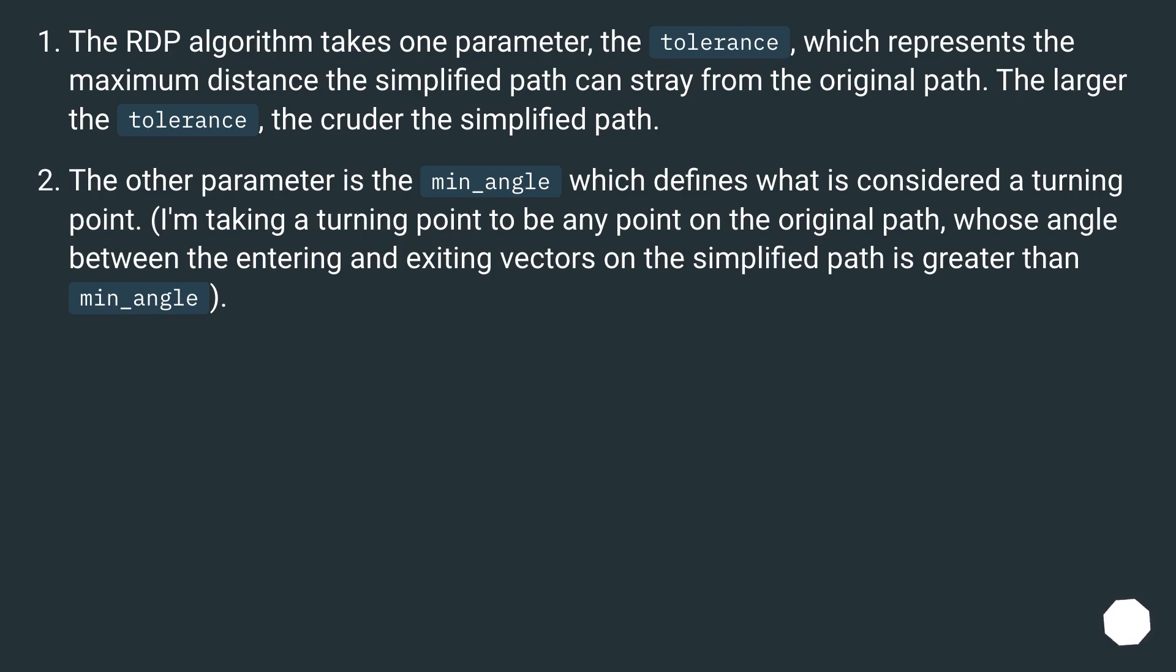The other parameter is the mean_angle which defines what is considered a turning point. I'm taking a turning point to be any point on the original path, whose angle between the entering and exiting vectors on the simplified path is greater than mean_angle.